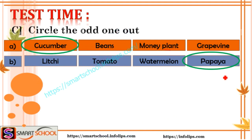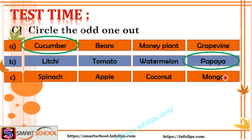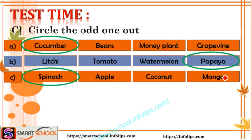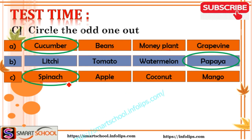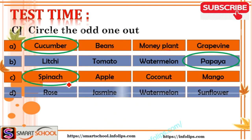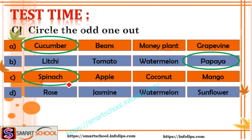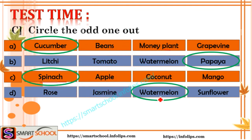Among spinach, apple, coconut, and mango — the odd one is spinach, because apple, coconut, and mango are big trees and spinach is a small plant. Among rose, jasmine, watermelon, and sunflower — the odd one is watermelon, because rose, jasmine, and sunflower are small plants and watermelon is a creeper.